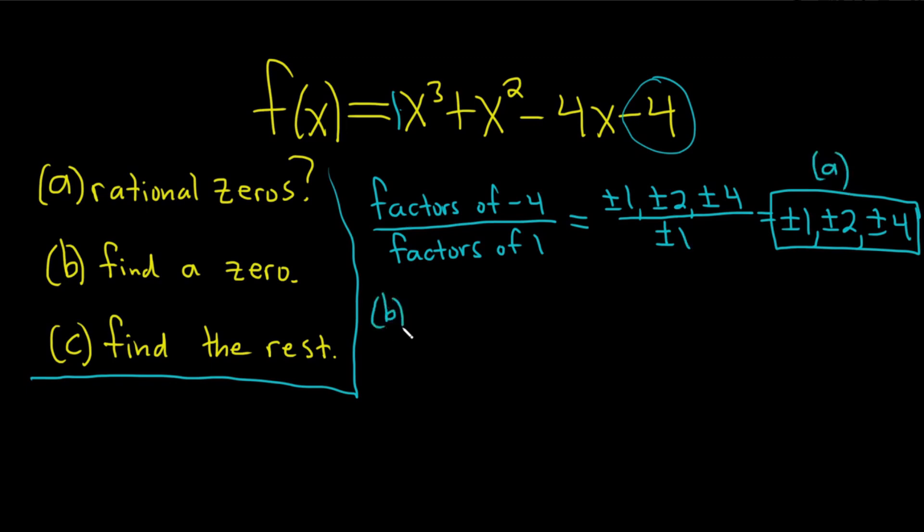Part B wants us to find a zero. So I think they want us to use this and synthetic division. So let's start by checking 1. So let's check 1. I'm going to show you how to do this. So to check if 1 is a zero, what you do is you put a 1 here like this. And then you write down the coefficients of your polynomial. So 1, 1, negative 4, negative 4. And then you use synthetic division. So you just pick 1 and then see if it works. How do you know if it works? We're going to go through this whole process. And if we get 0 as a remainder, then we know this is one of the answers.